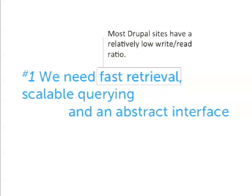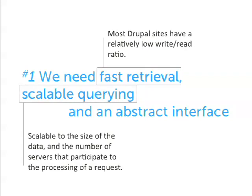The second thing we need is scalable querying. We need to be able to increase the number of documents we manage and still query on those documents quickly. Scalable means scalable to the size of the data, but also to the number of servers that participate in processing a request. If you have a really large site, you might want several database servers, several front-end servers, and we need to be able to scale to those.